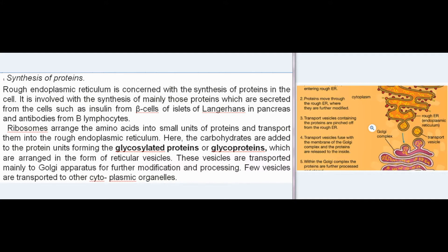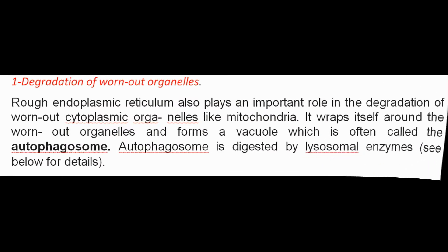Ribosomes arrange amino acids into small units of proteins and transport them into the rough endoplasmic reticulum. Here, carbohydrates are added to protein units forming glycosylated proteins or glycoproteins, arranged as reticular vesicles. These vesicles are transported mainly to the Golgi apparatus for further modification and processing, while few are transported to other cytoplasmic organelles. Rough endoplasmic reticulum also plays a role in degradation of worn-out organelles like mitochondria by wrapping around them to form a vacuole called an autophagosome, which is then digested by lysosomal enzymes.